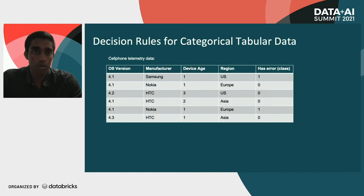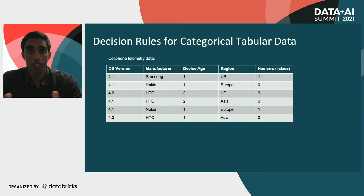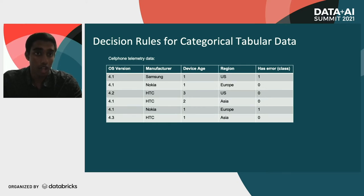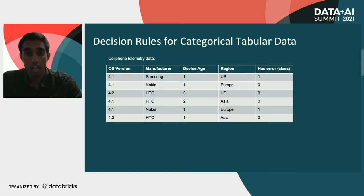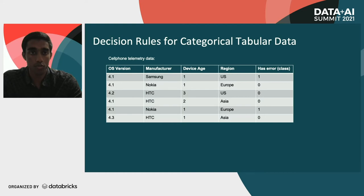Now let's jump into the approach we're going to take with decision rules for categorical tabular data. I'll also show how to extend that to continuous variables in a bit, but we'll start with categorical variables. Consider this example where you have cell phone telemetry data — you might have a few different features from all the different cell phones deployed around the world, such as operating system version, manufacturer, age of the device, and the region the device is operating in.